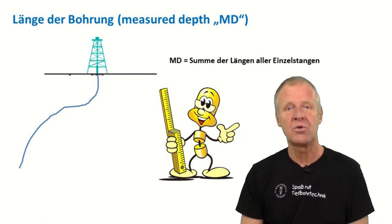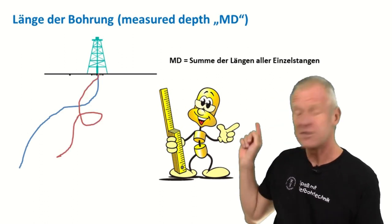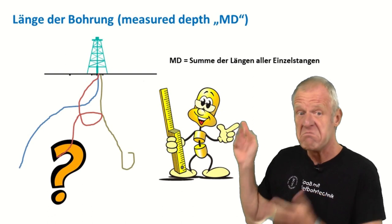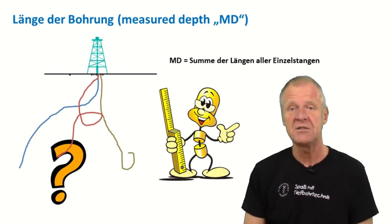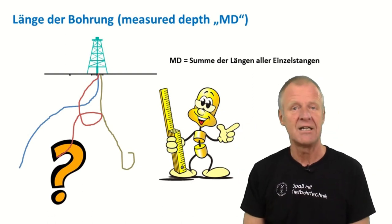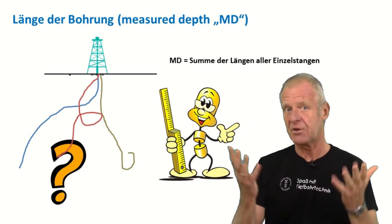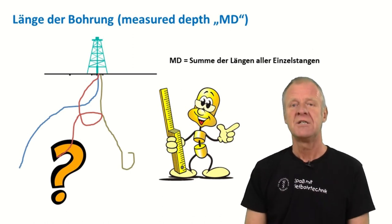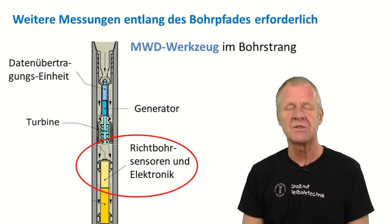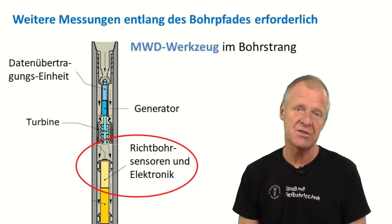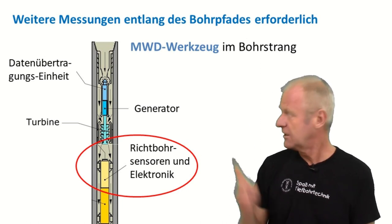But if we know the length of the borehole, we still do not know how the well path looks like. You cannot derive the borehole trajectory from the length of the wellbore alone. We still need further measurements, and for this there is an MWD system in the drill string to help us.